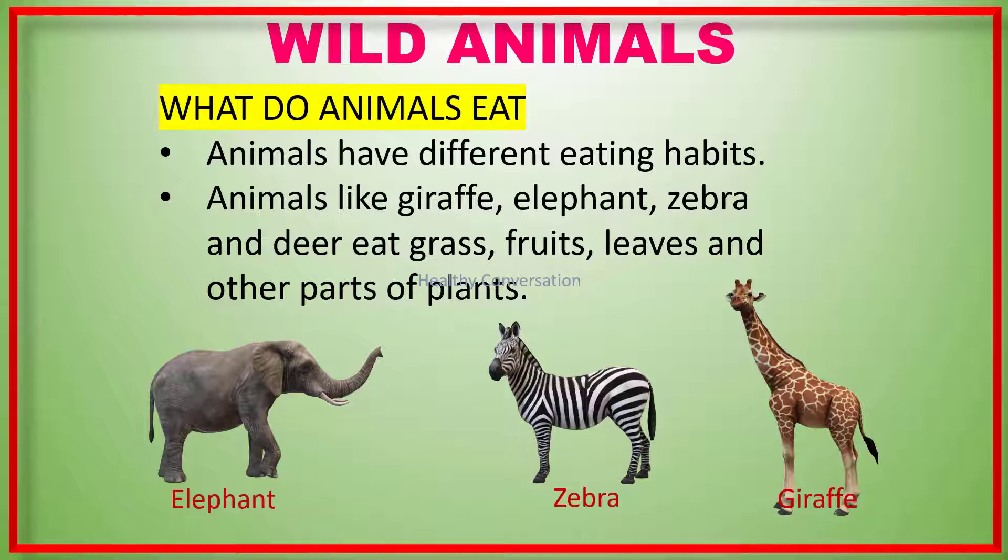Now we will discuss about what animals eat. Animals have different eating habits. Animals like giraffe, elephant, zebra, and deer eat grass, fruits, leaves, and other parts of plants. These animals are called herbivores. As you can see in this picture, there is a picture of elephant, zebra, and giraffe — these are called herbivores.